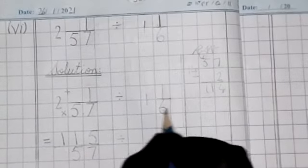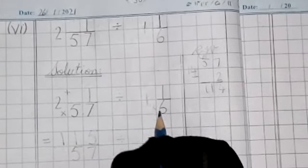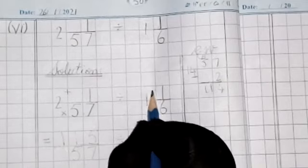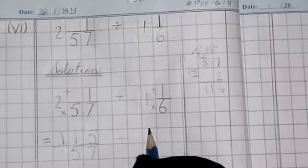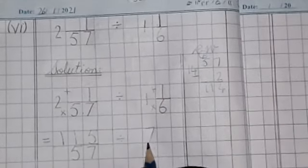115. And for 1 whole 1 by 6, 1 times 6 plus 1. Very good. 7 by 6.